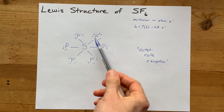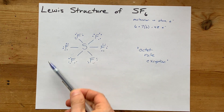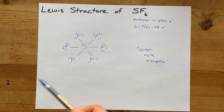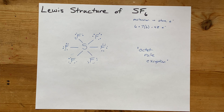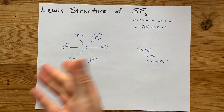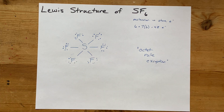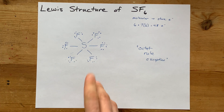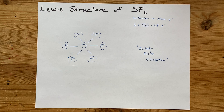Congratulations — you've got your Lewis structure for sulfur hexafluoride, SF6. Thanks for being with me, and best of luck.